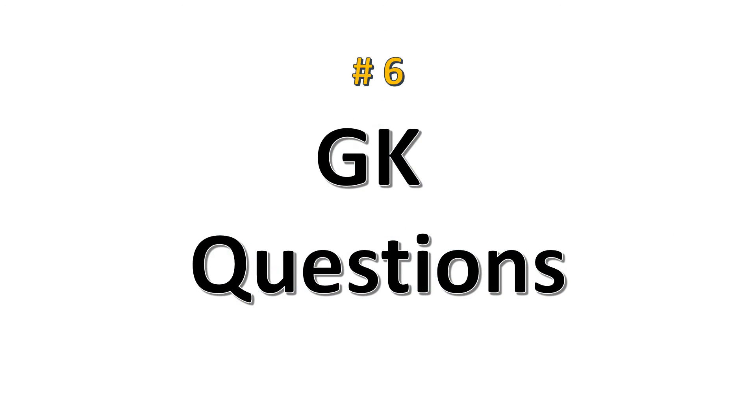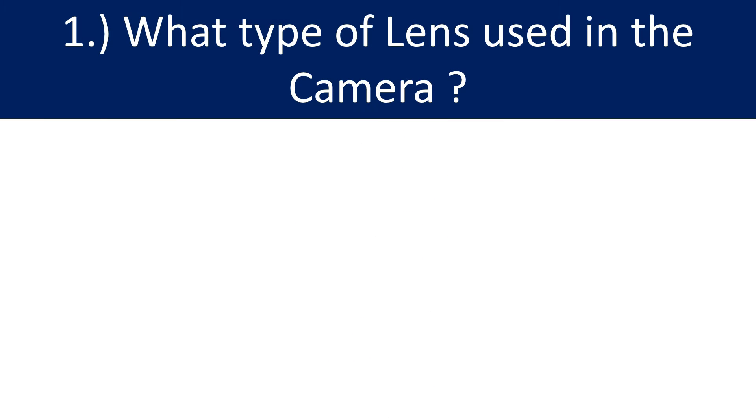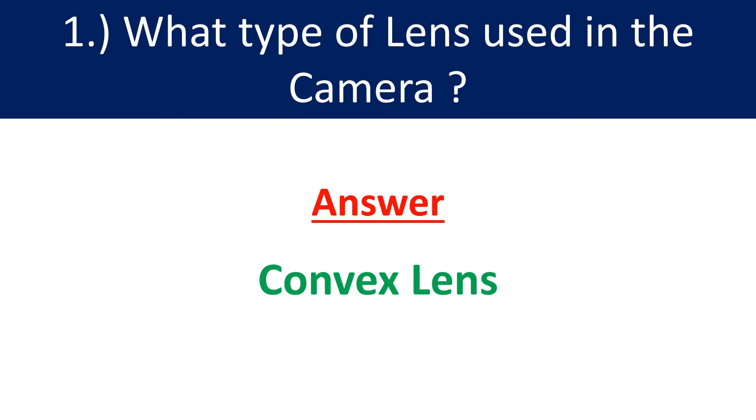GK questions. Q1: What type of lens is used in a camera? Correct answer is convex lens.